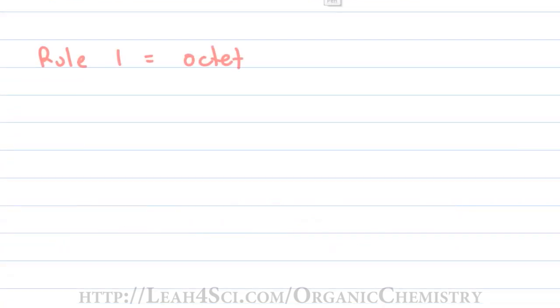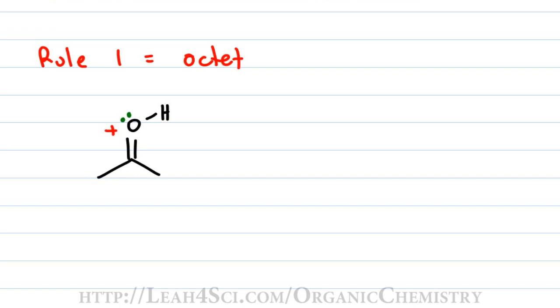The first thing you want to look for is a complete octet. If you find yourself looking at two contributing structures where one has a complete octet and the other doesn't, you're going to favor the structure with a complete octet. For this molecule, we have a pi bond sitting between carbon and oxygen, and oxygen has a positive charge.